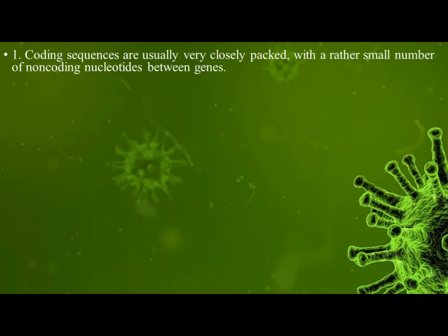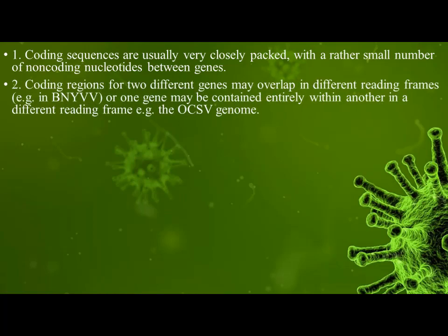First, coding sequences are generally very closely packed, with a rather small number of non-coding nucleotides between genes. Second, coding regions for two different genes may overlap in different reading frames — for example in BNYVV. One gene may be contained entirely within another in a different reading frame, for example in the OCSV genome.